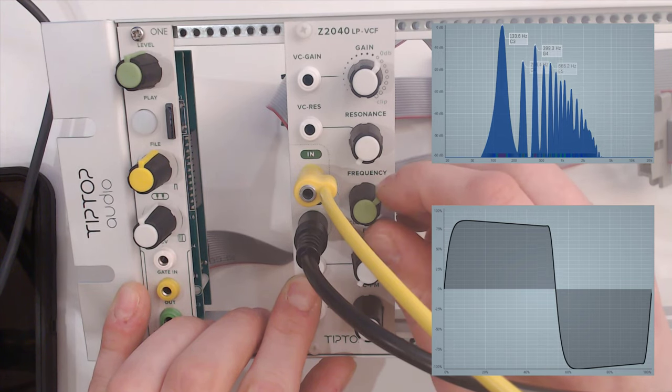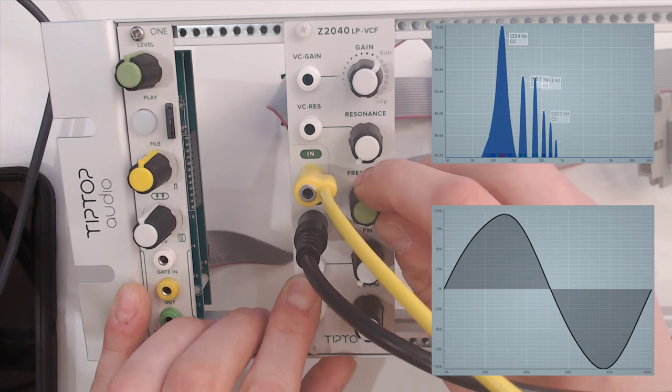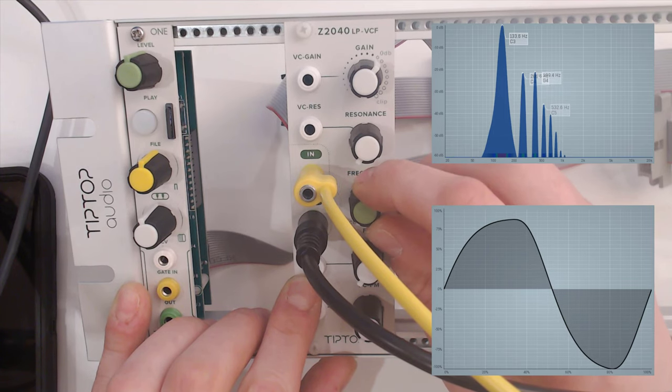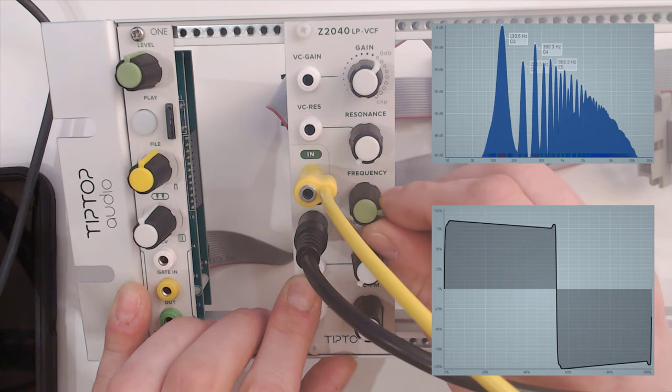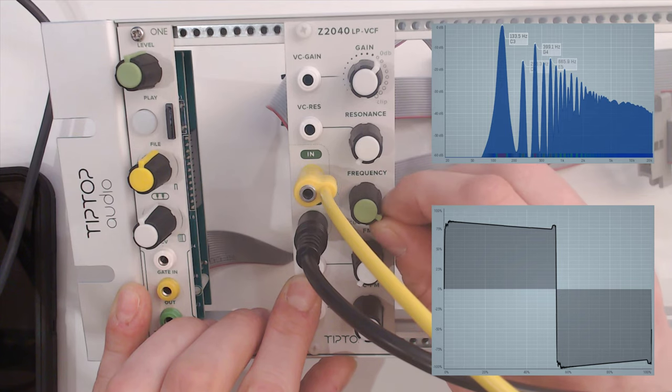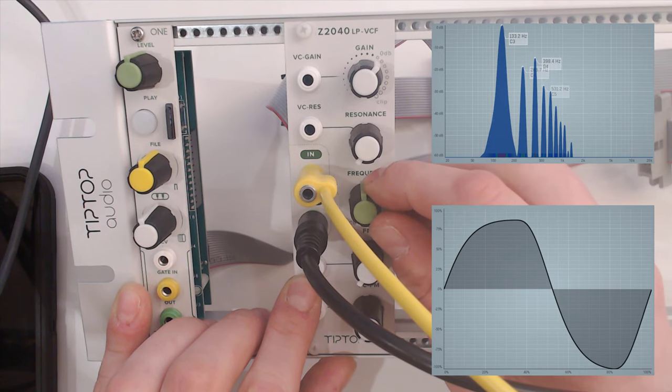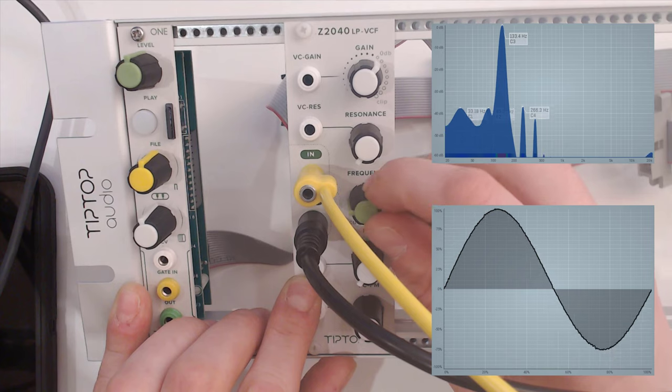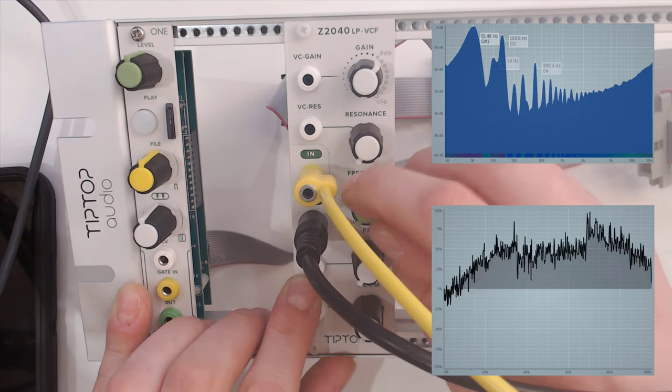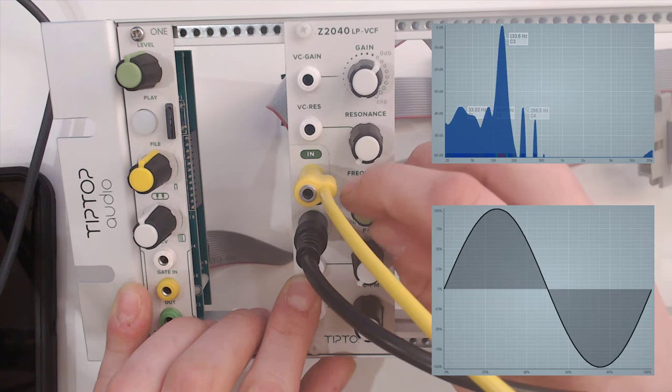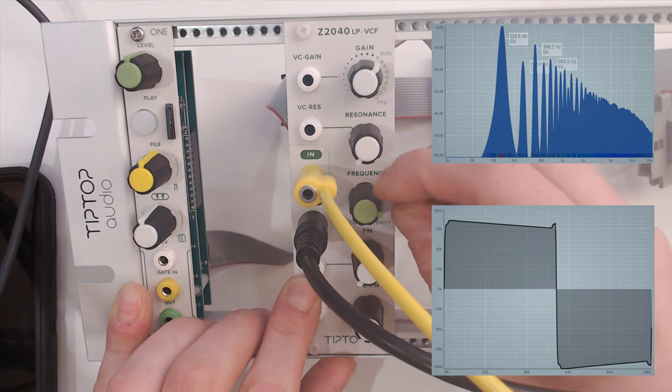So if I turn this knob and lower the cutoff frequency, you see that we lose a lot of the higher regime tones there, all the way down. And we can actually go all the way down that we even lose our bass note, so to say.